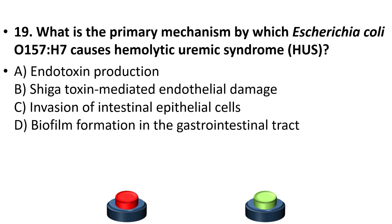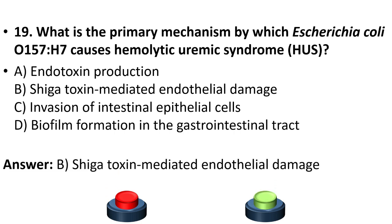Question 19: What is the primary mechanism by which E. coli O157:H7 causes hemolytic uremic syndrome (HUS)? Options: endotoxin production, Shiga toxin-mediated endothelial damage, invasion of intestinal epithelial cells, biofilm formation in the gastrointestinal tract. The answer is option B, Shiga toxin-mediated endothelial damage.